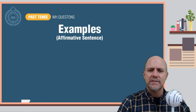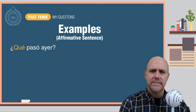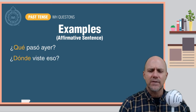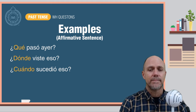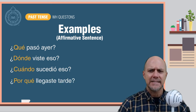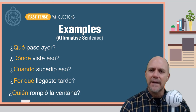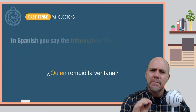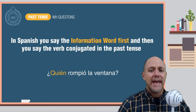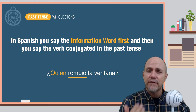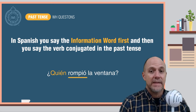Here are some examples in Spanish. ¿Quién rompió la ventana? As you can see, in Spanish, you say the information word first, and then you say the verb conjugated in the past tense. That simple.